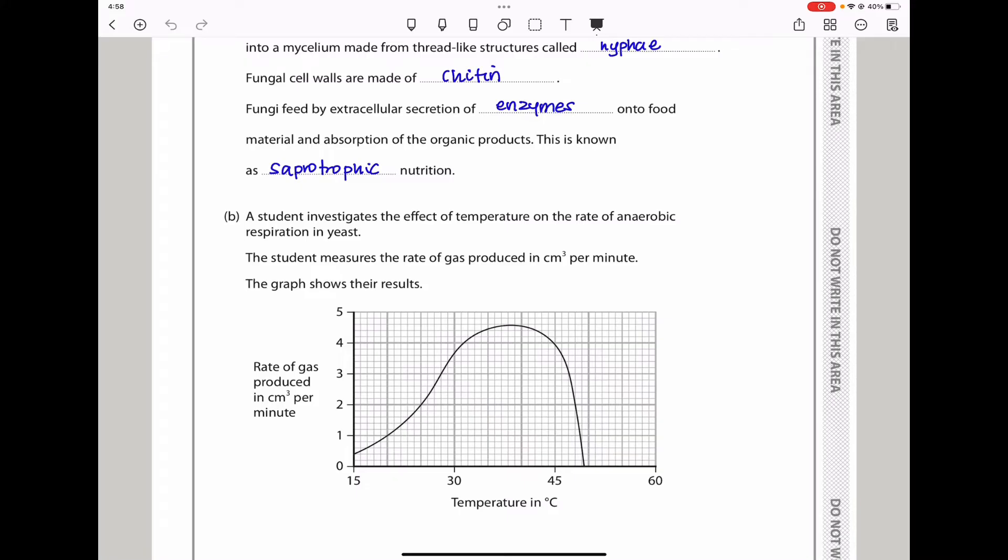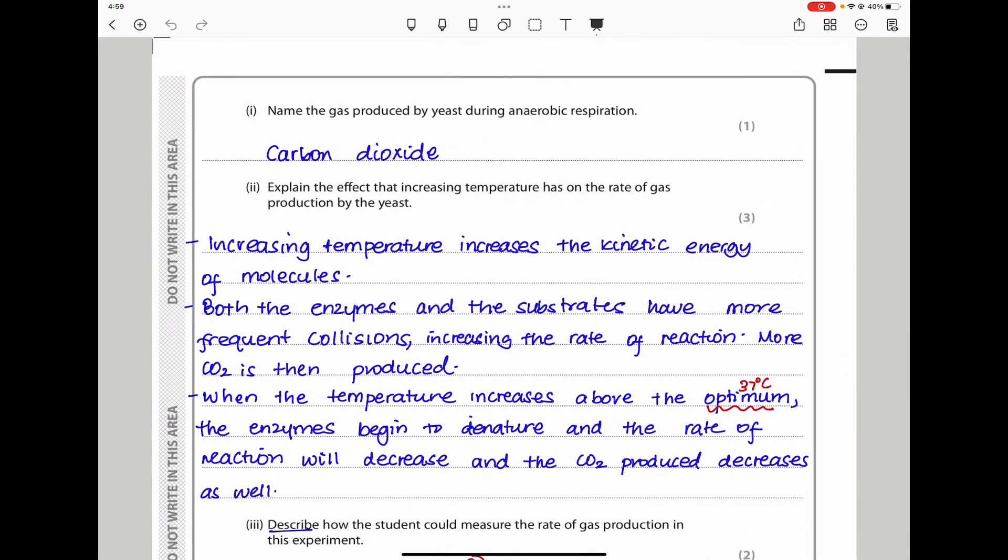A student investigates the effect of temperature on the rate of anaerobic respiration in yeast. The student measures the rate of gas produced in centimeters cubed per minute. The graph shows their results. We can see there is a rate of gas produced in centimeters cubed per minute as the temperature increases. This is a typical graph. As the temperature increases, the rate of gas produced increases until a specific temperature and then it begins to decrease as enzymes are denatured. Name the gas produced by yeast during anaerobic respiration. This is carbon dioxide gas.